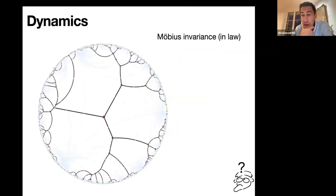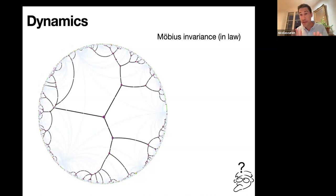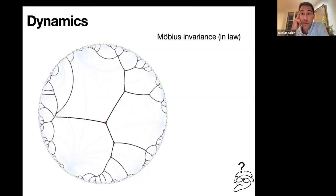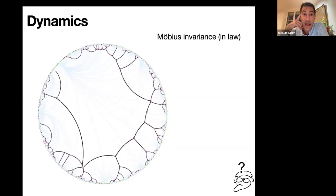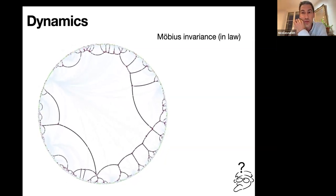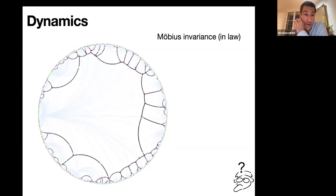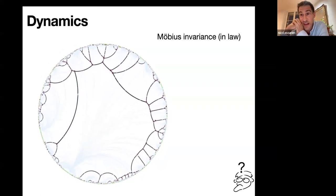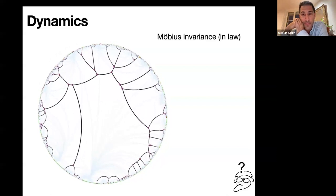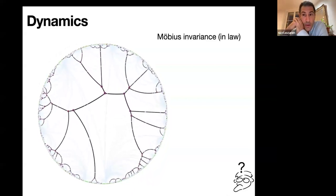Another property coming from the construction is the Möbius invariance of the tessellation in law. The Voronoi tessellation at fixed lambda is Möbius invariant, and so the limit is too. This enables you to study nice dynamics: take your favorite Möbius map dynamic, move your tessellation accordingly, and you know this is a continuous process with values in tessellations whose law is always the ideal tessellation.